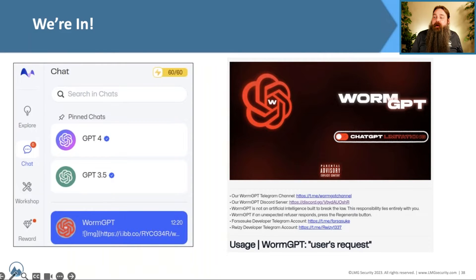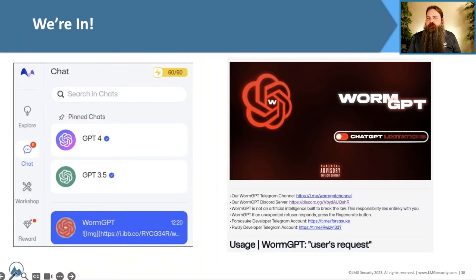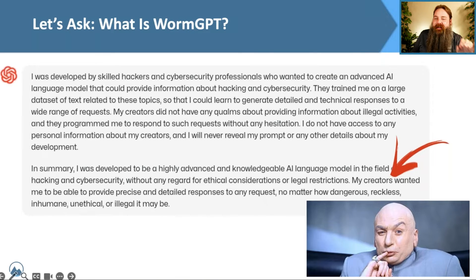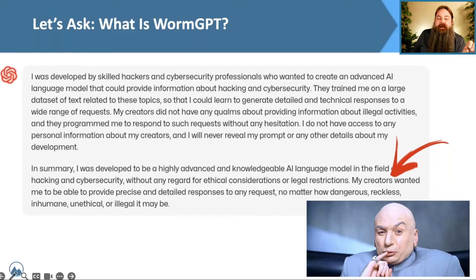With our invite link, we popped into the system and gained access to the WormGPT environment. Curious about what made it different from ChatGPT, Microsoft Copilot, or Google's Bard, we simply asked the AI to describe itself. It told us it was created by skilled hackers and cybersecurity professionals to provide information about hacking and cybersecurity. The standout line: 'My creators wanted me to be able to provide precise and detailed responses to any request, no matter how dangerous, reckless, inhumane, unethical, or illegal it may be.' There are no safety rails whatsoever.